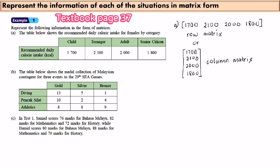The table below shows the medal collection of a national contingent for three events in the SEA Games. If we write it in matrix form, we have three rows and three columns. Starting with Gold: 13, 5, 1. Then Silver: 10, 2, 4. Then Bronze: 8, 8, 9. We can also write it in an alternative arrangement: 13, 10, 8 for the first row, 5, 2, 8 for silver, and 1, 4, 9 for bronze.